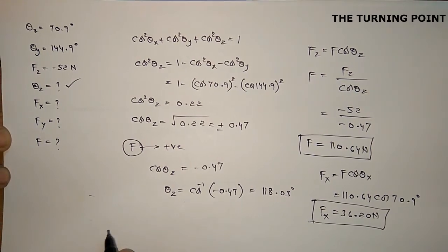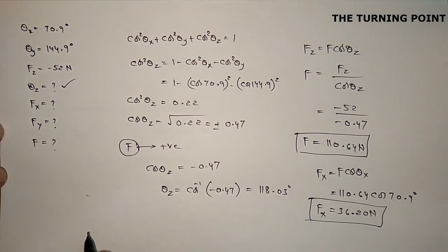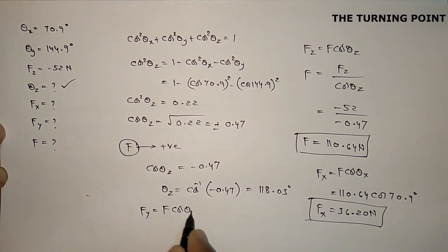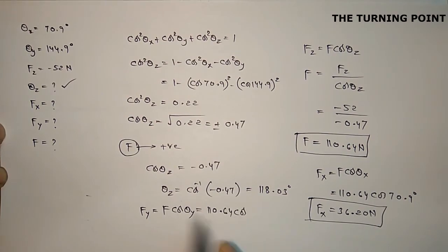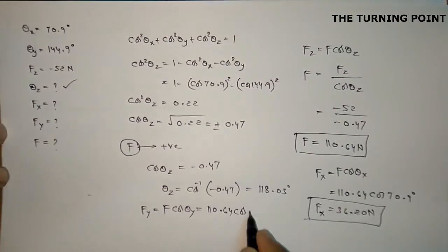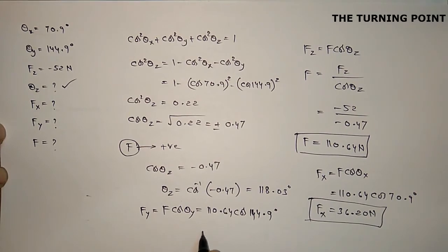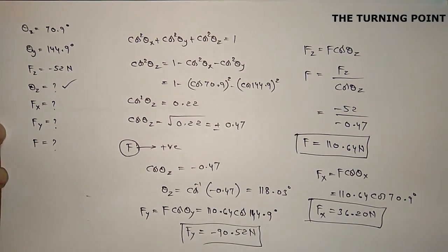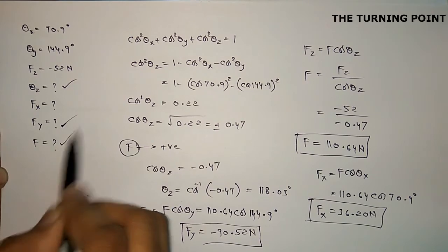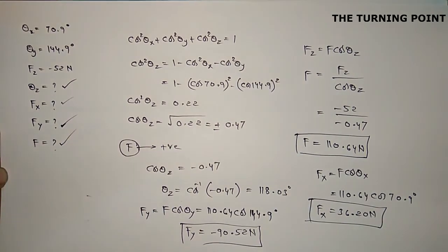For Fy, we use the same relation: Fy = F·cos theta y = 110.64 × cos(144.9°). This gives Fy = minus 90.52 newtons. So we have now calculated Fy, Fx, F, and theta z — all required parameters.